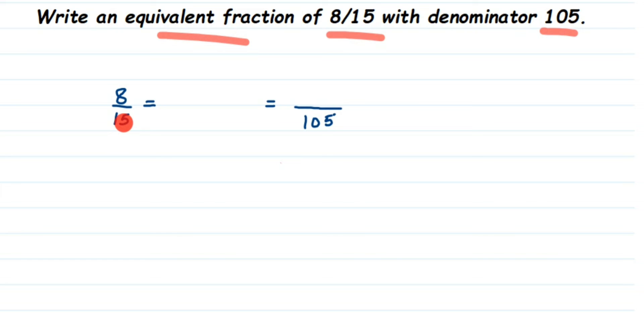So with this 15, what are we multiplying to get 105? What should we multiply here to get 105? We know that 15 times 7 is 105, so here we're multiplying with 7.